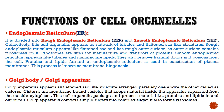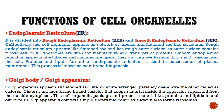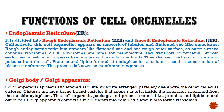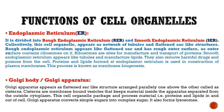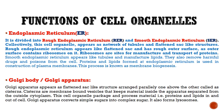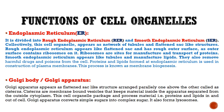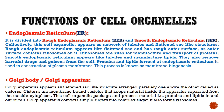Ribosomes are the site for manufacture and transport of proteins. Smooth endoplasmic reticulum appears like tubules and manufactures lipids. It also removes harmful drugs and poisons from the cell. Proteins and lipids from the endoplasmic reticulum are used in the construction of plasma membranes — this process is known as membrane biogenesis.